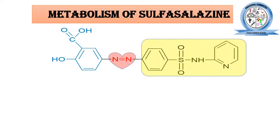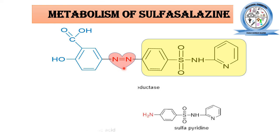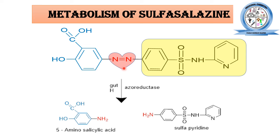This diagram shows the metabolism reaction. This is the chemical structure of sulfasalazine, and this is the azo bond being targeted by the azoreductase enzyme. Sulfasalazine is converted into its two active metabolites: the 5-aminosalicylic acid, which is cleaved from this side, and the sulfapyridine portion, which performs antibacterial action, while the 5-aminosalicylic acid produces its anti-inflammatory action.